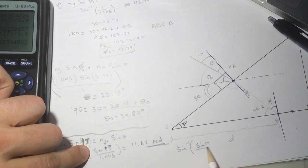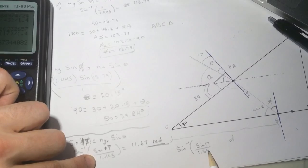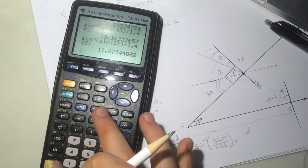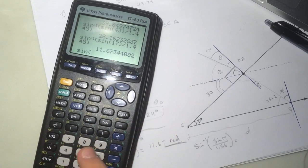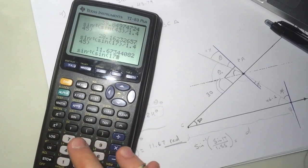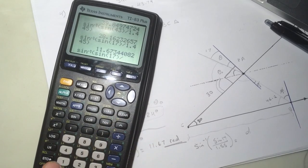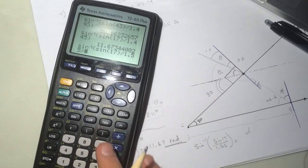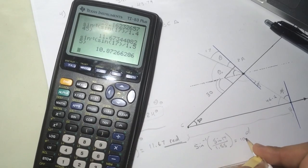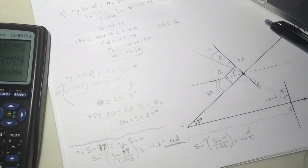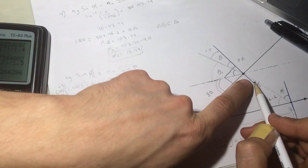Sine inverse of sine 17 divided by 1.55. So sine of, let's do sine inverse of sine 17 divided by 1.55. They gave us the n for the violet in the question. So we got 10.87.